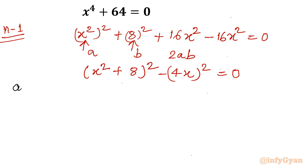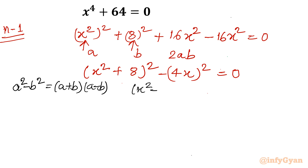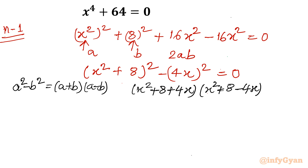Now I will use one algebraic identity called the difference of squares: a-squared minus b-squared equals (a + b)(a − b). So I will write our equation as (a + b)(a − b), giving us (x-squared + 8 + 4x)(x-squared + 8 − 4x) equal to zero.